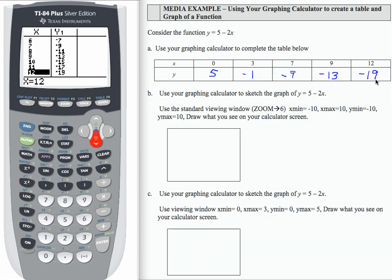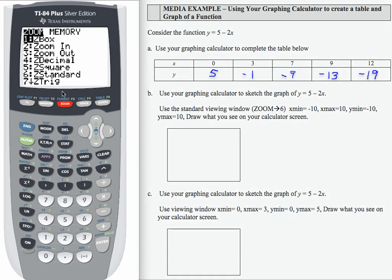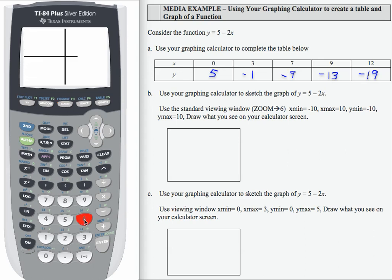That's how we use our table to generate essentially sets of ordered pairs that we could use to graph by hand, but in this case, we're going to use our graphing calculator. So, I'd like to do that first by using the standard viewing window. To get there, I'm going to press the zoom button, and then 6. That is going to give me a graph that's on a window of negative 10 to 10 for x, negative 10 to 10 for y.